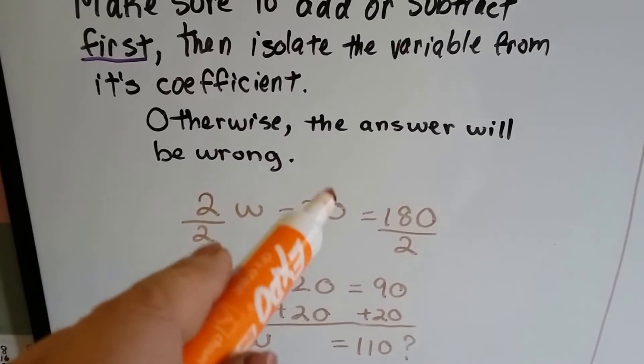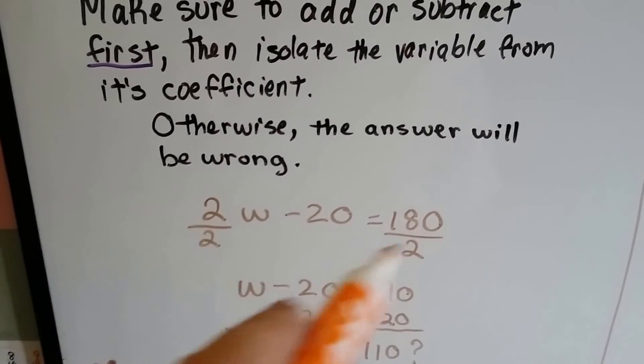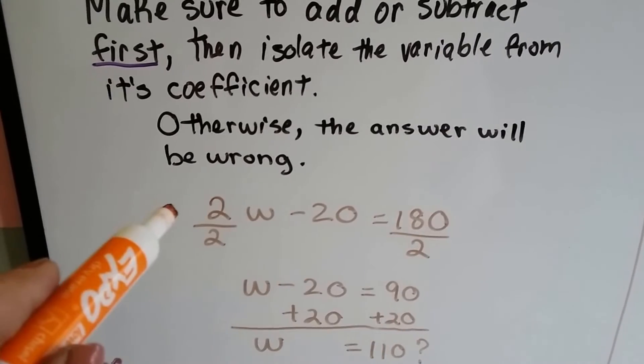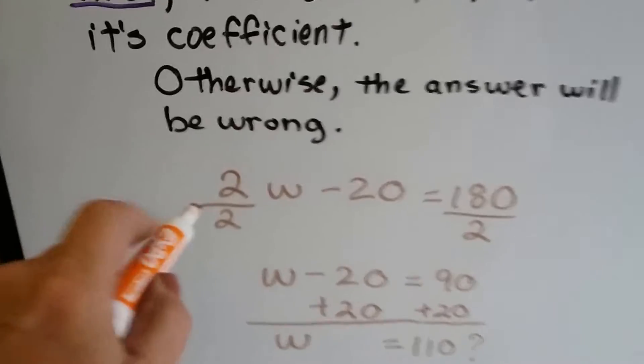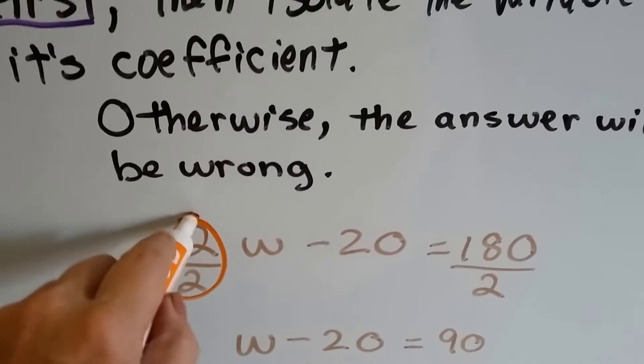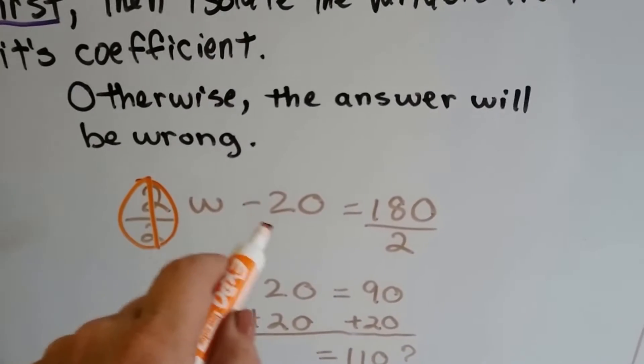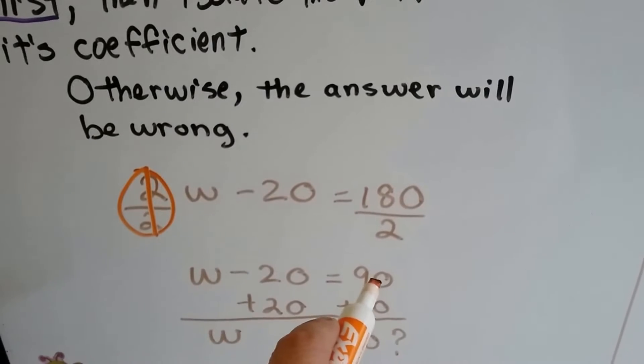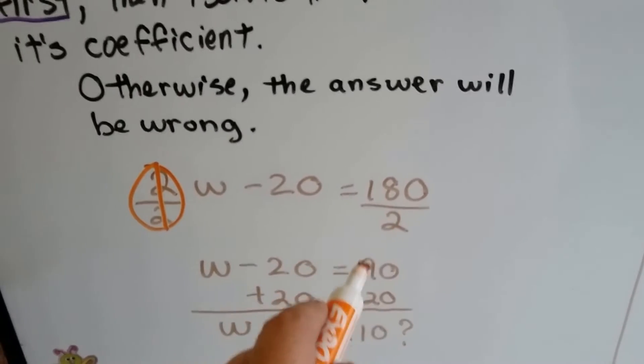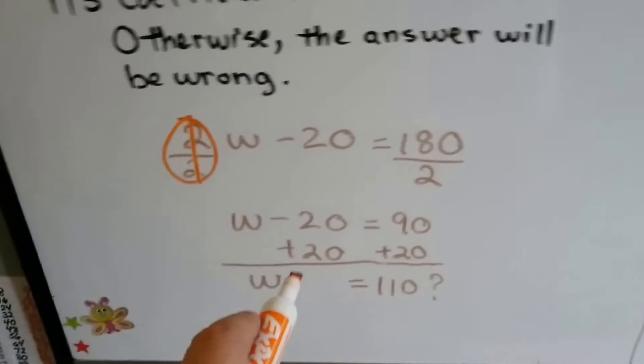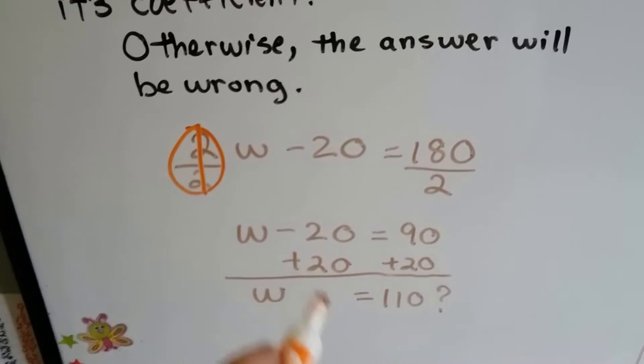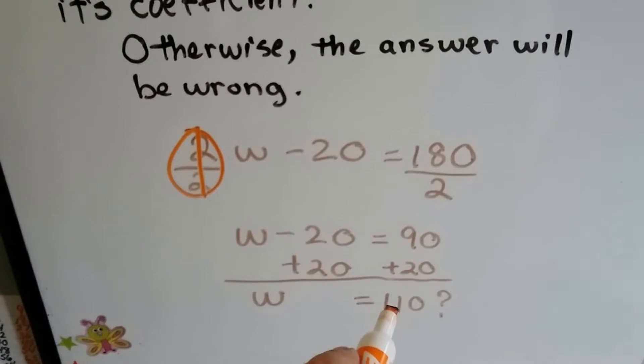If we have 2w minus 20 equals 180 and we divide both sides by the 2, that's going to isolate the w. It's going to turn into a 1w. Then we're going to have w minus 20 equals 90 because 180 divided by 2 is 90. Now when we go to add the 20 to each side, the w is going to equal 110.